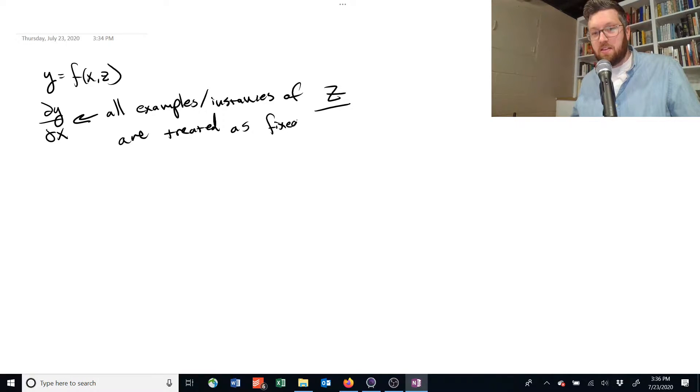And the idea there is that when we're taking the partial derivative, what we're trying to do is see how y changes when we make small changes to x, and we're not making any changes to z then.